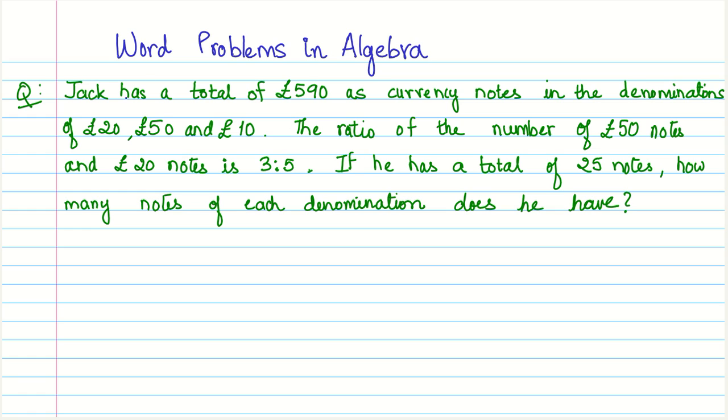The problem statement says Jack has a total of £590 as currency notes in the denominations of £20, £50 and £10. So he has some number of £10, some number of £50 and some number of £20, and all the amounts added together is £590.